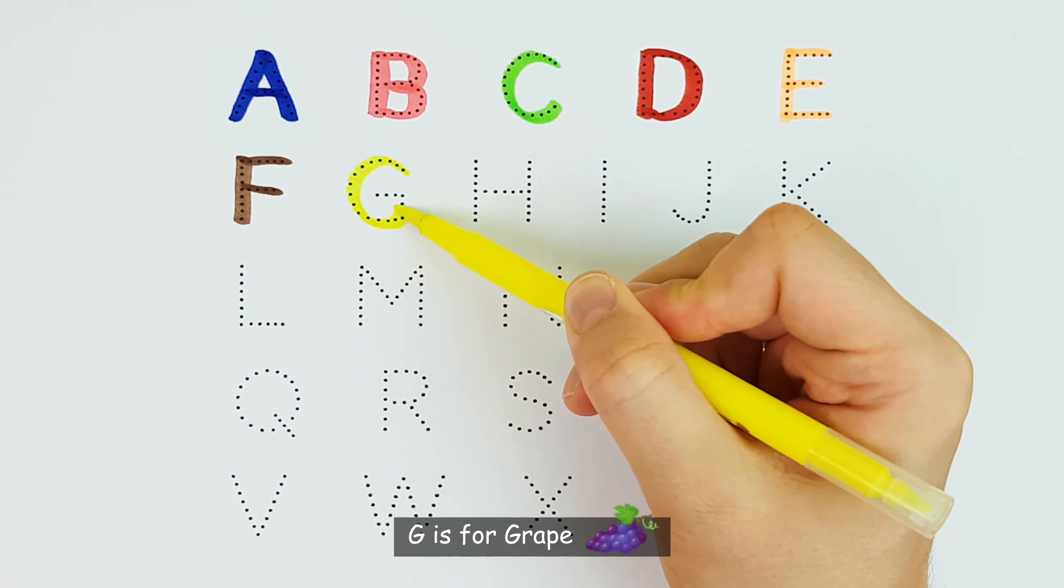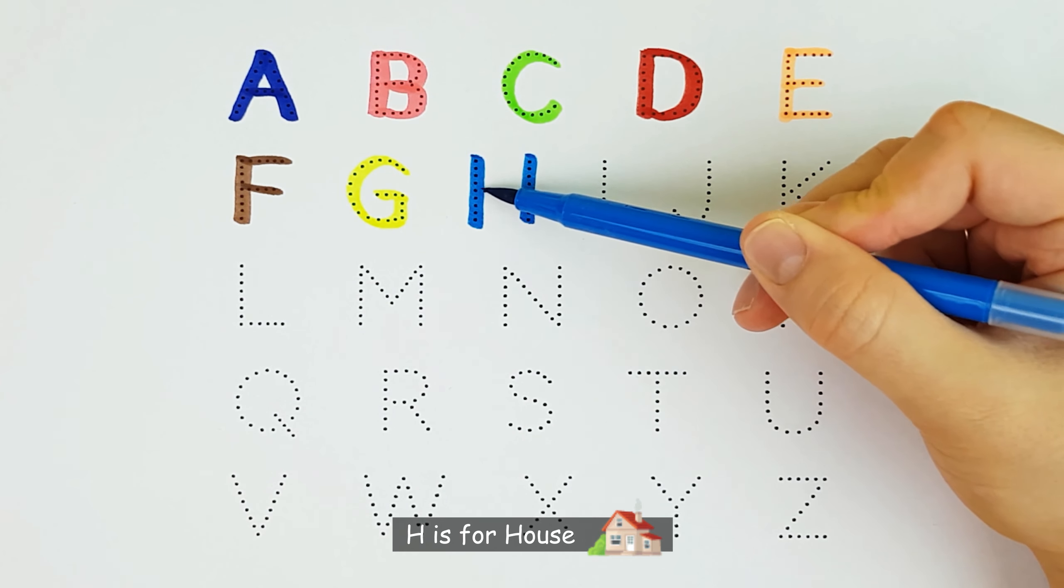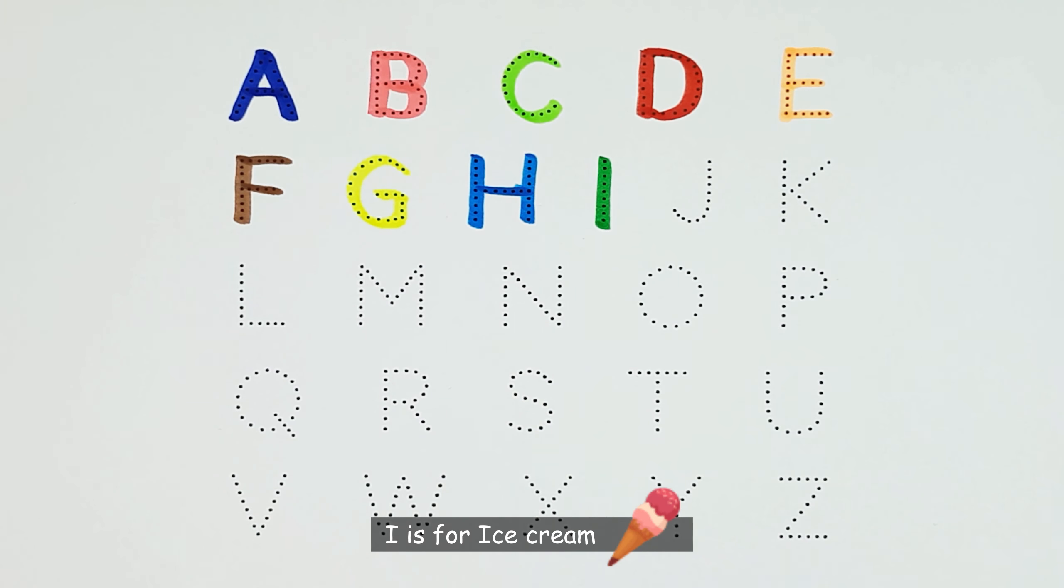G. G is for Grape. G. H. H is for House. H. I. I is for Ice Cream. I.